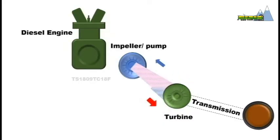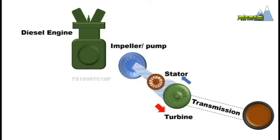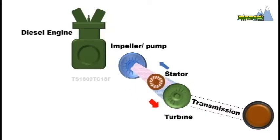A device called the stator is located between the impeller and the turbine. The main function of the stator is to give direction to the returning fluid from the turbine so that the fluid enters into the impeller in the direction of its rotation.